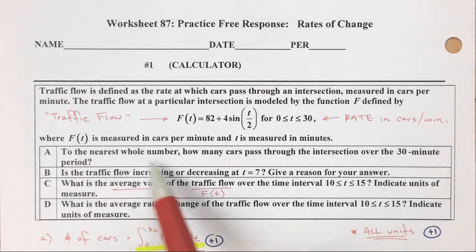So part A is going to be the number of cars. So from 0 to 30 minutes, I'm not going to write that whole function over again. I'm just going to write f of t. I do have to put the function into my calculator. And then that's one part of my answer. I put it all in my calculator, and I get that many cars. I make sure to label my answer.